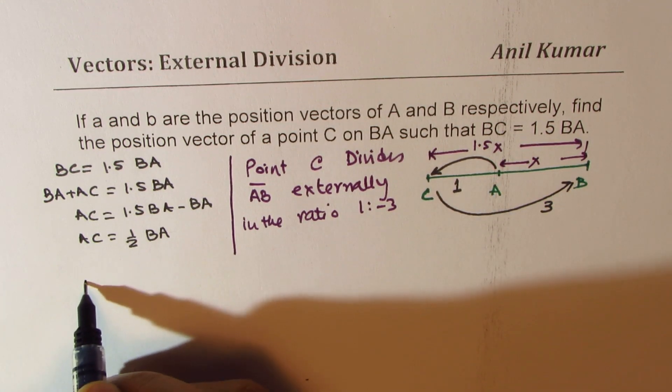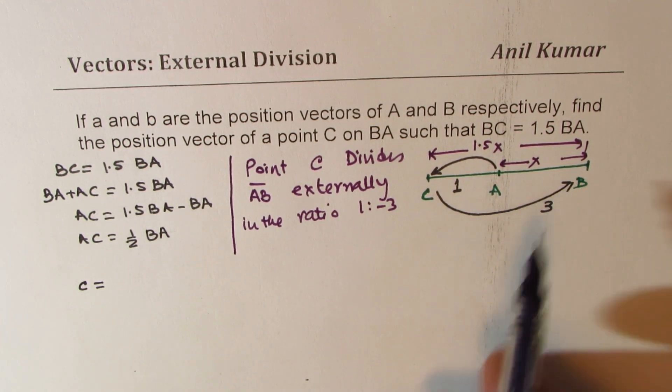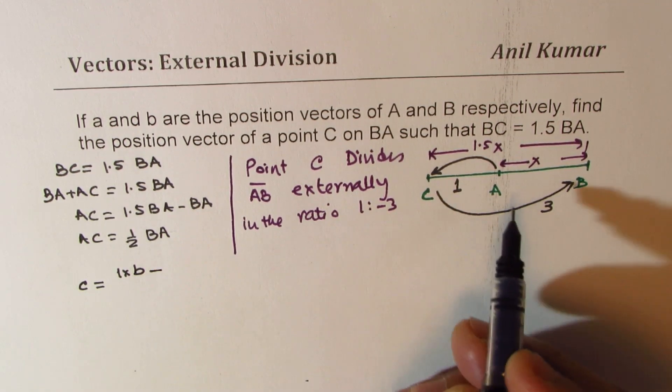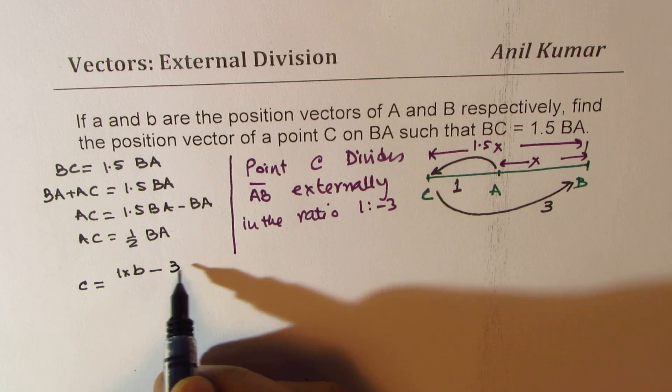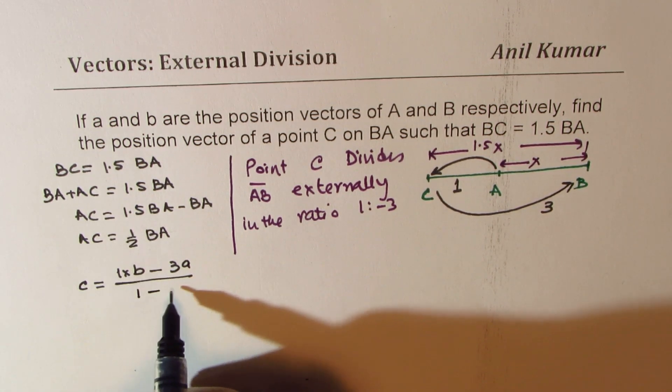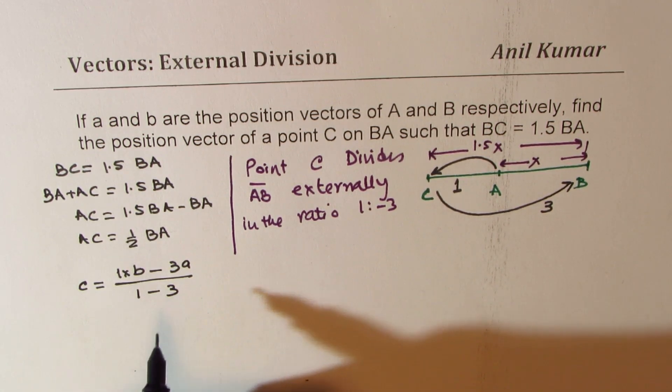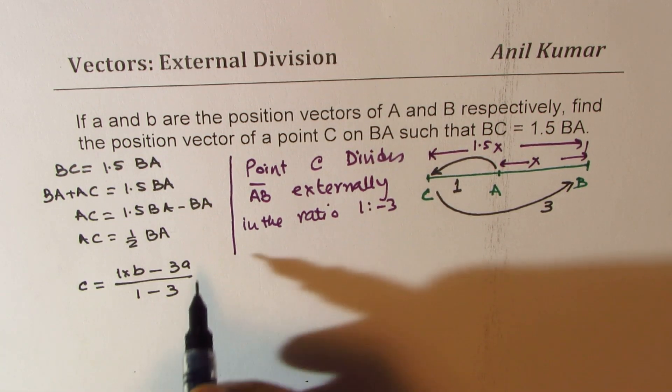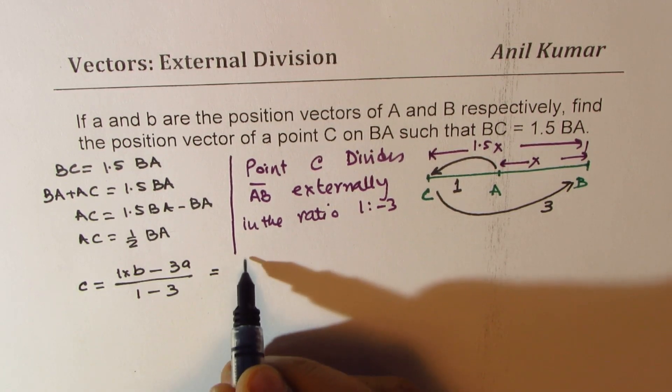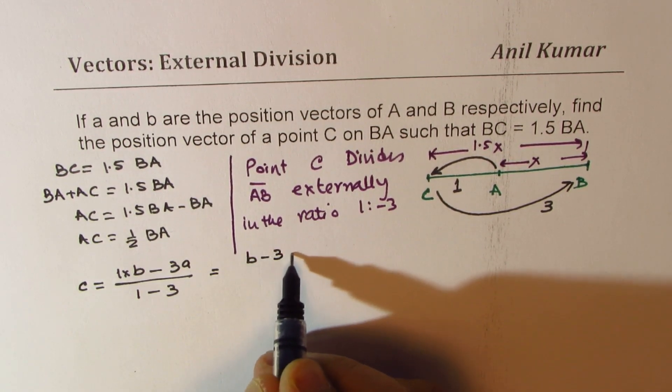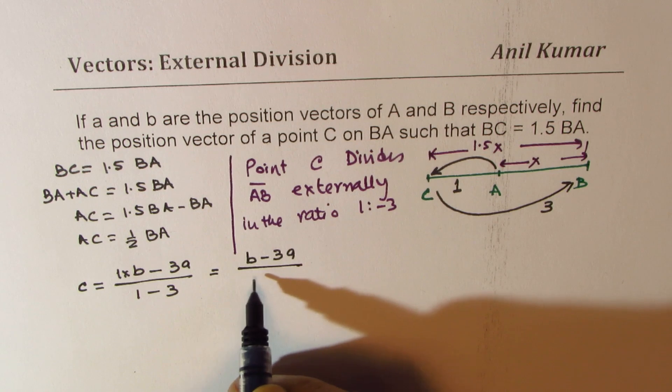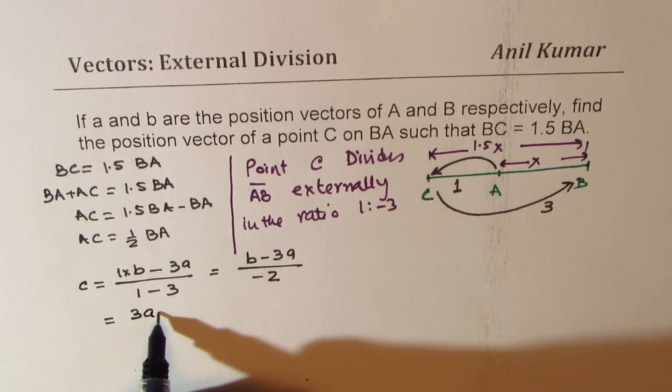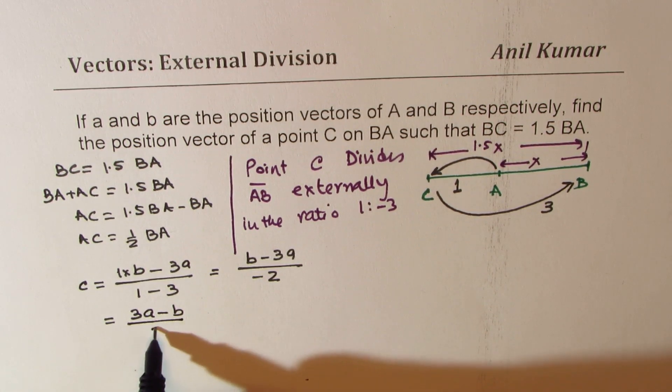So from here, you could see that the coordinates for point C is 1 times B minus 3 times A over 1 minus 3. So that is how you get the coordinates of point C, which is equal to B minus 3A over minus 2, or you could write this as 3A minus B over 2.